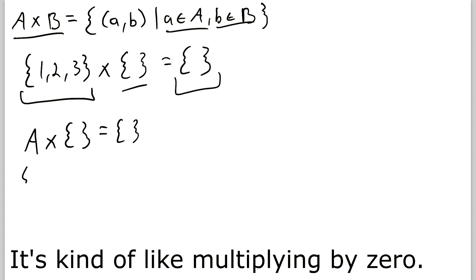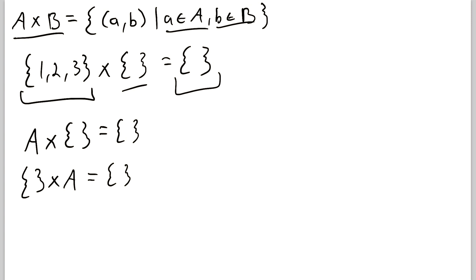And of course in this case it doesn't matter what order you do it in. If you take the empty set cross with A you again just get the empty set because you can't take any elements from the empty set to make an ordered pair.